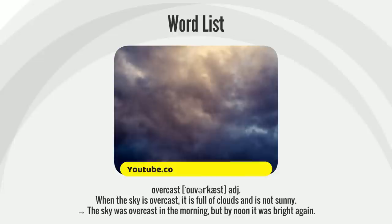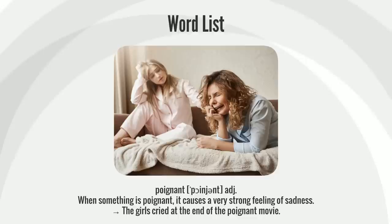When the sky is overcast, it is full of clouds and is not sunny. The sky was overcast in the morning, but by noon it was bright again.